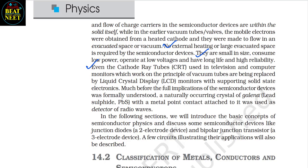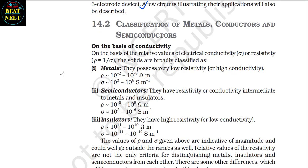Even the cathode ray tubes used in television and computer monitors, which work on the principle of vacuum tubes, are being replaced by liquid crystal displays (LCD) with supporting solid-state electronics. Much before the full implications of semiconductor devices were formally understood, a naturally occurring crystal of galena (lead sulphide, PbS) with a metal point contact was used as a detector of radio waves. In the following sections we will introduce the basic concepts of semiconductor physics and discuss some semiconductor devices like junction diodes (a 2-electrode device) and a bipolar junction transistor (a 3-electrode device).